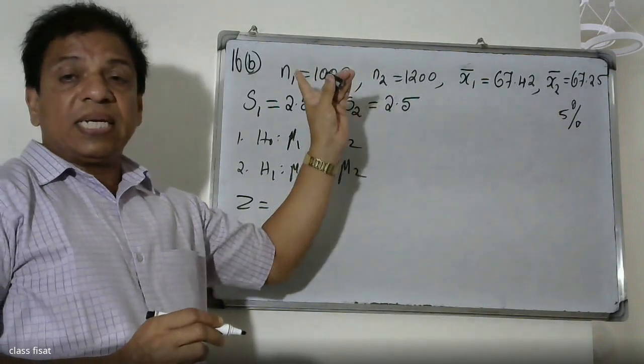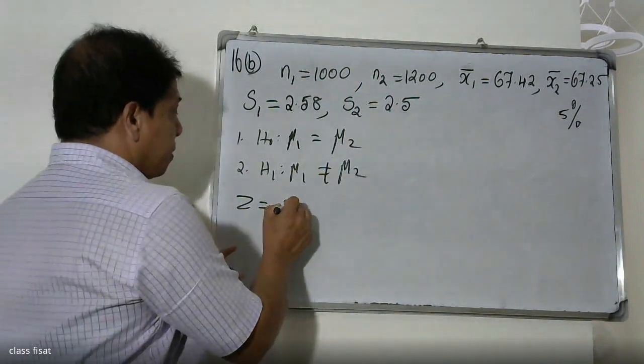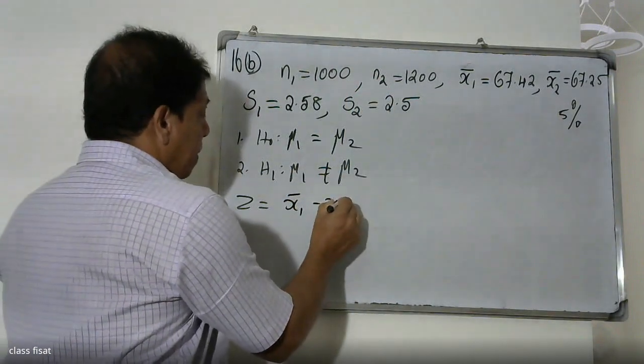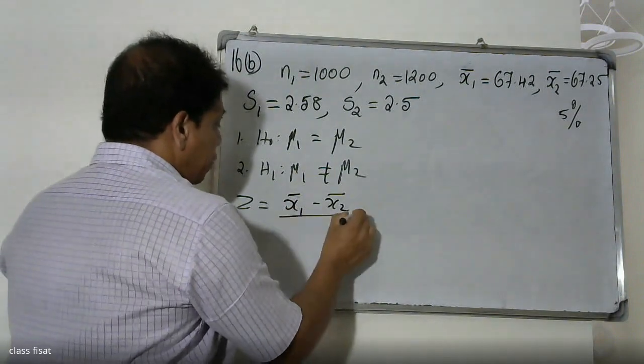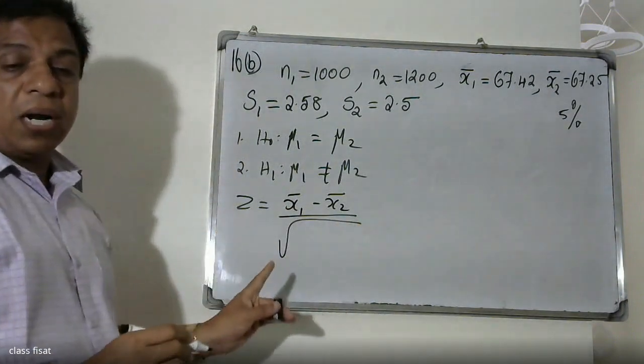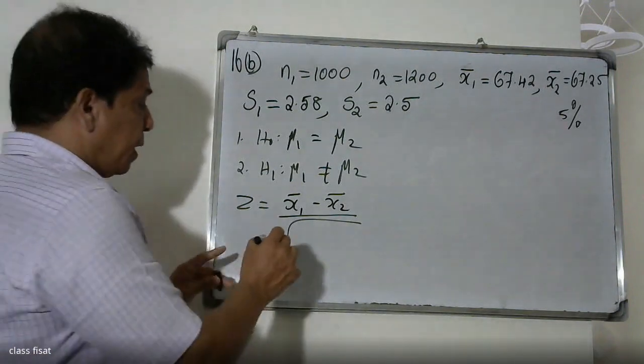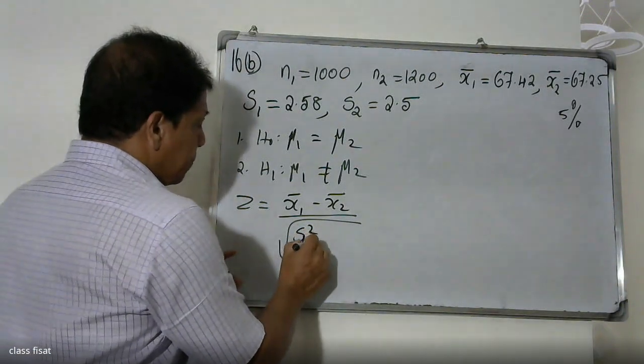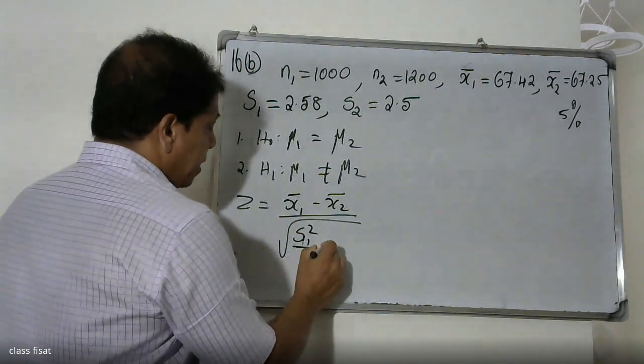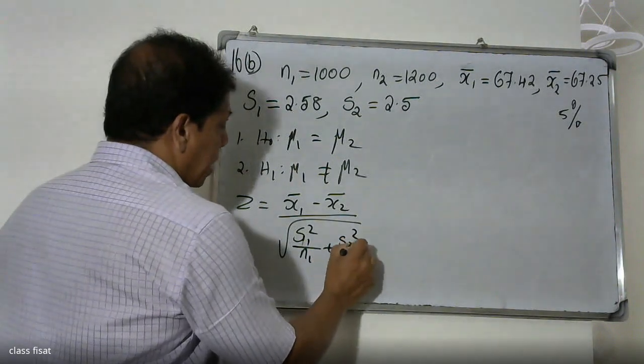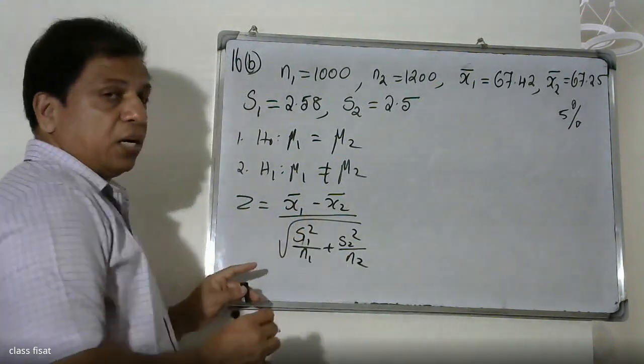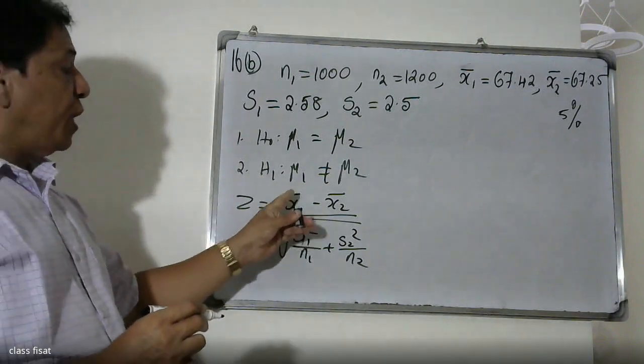Now we have to calculate the formula: Z = (x̄1 - x̄2) divided by root of (s1² / n1 + s2² / n2).